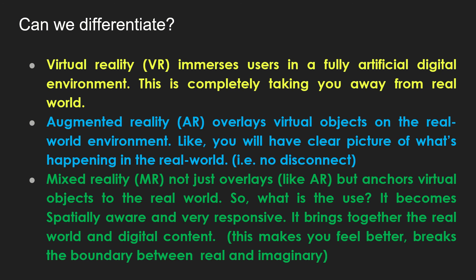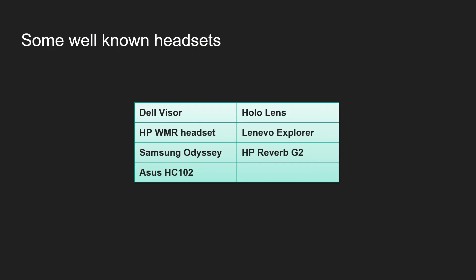The major difference is that mixed reality anchors virtual content on the real world very nicely and is very responsive. Mixed reality headsets available in the market include Dell Visor, HoloLens, HP WMR (Windows Mixed Reality headset), Lenovo Explorer, Samsung Odyssey, HP Reverb G2, and ASUS HC102 — plus many others.